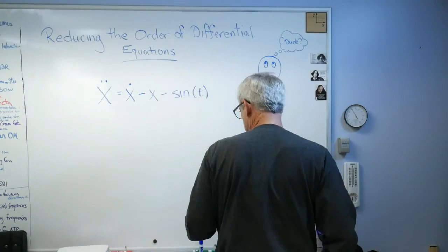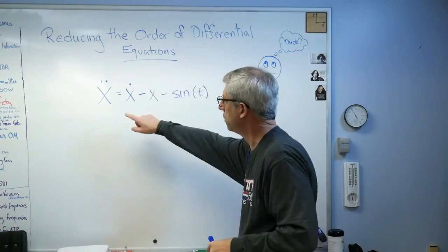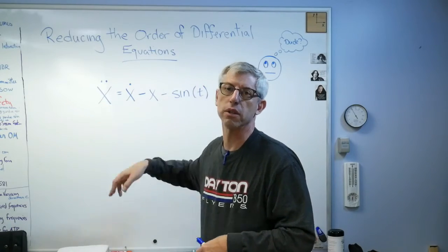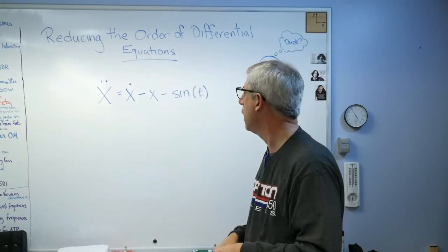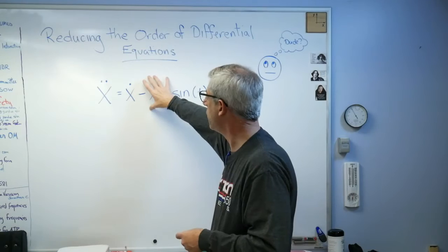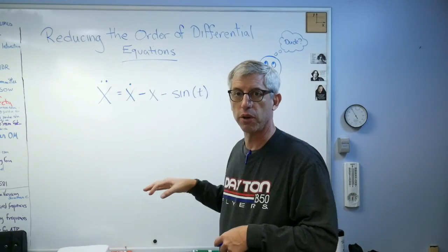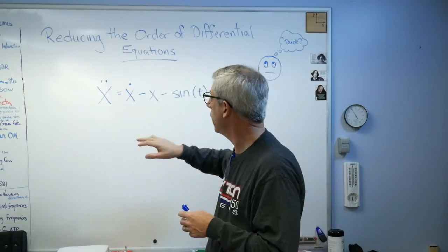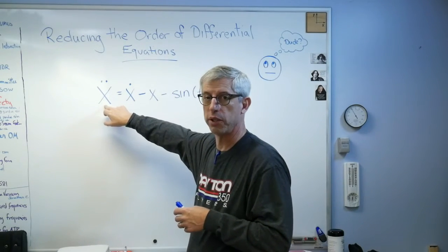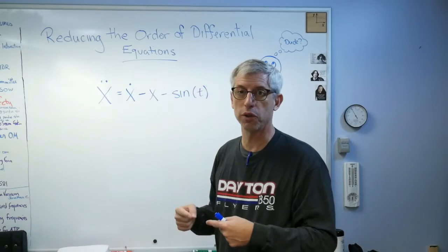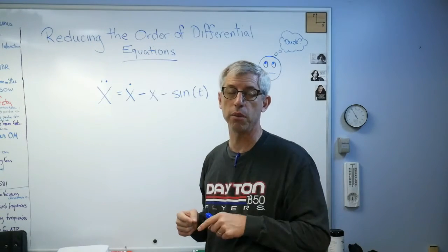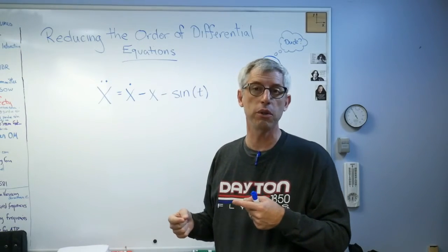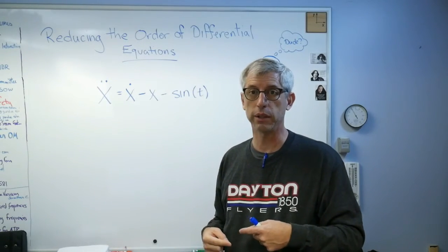So here's the deal. A lot of number crunching packages don't do second order differential equations. Second order means it's got a second derivative, and there's third order, and fourth order, and so on. So how do you turn this into a first order equation? Well, you can't, but you can turn it into two first order equations. So if I have one second order equation, I can turn it into two first order equations. So the order times the number of equations is a constant. If this was a fourth order equation, I could turn it into four first order equations.